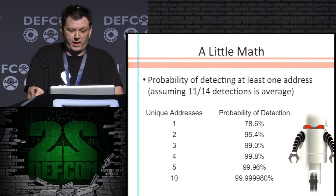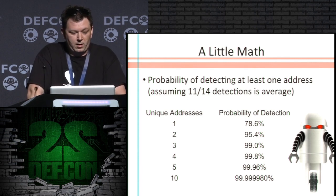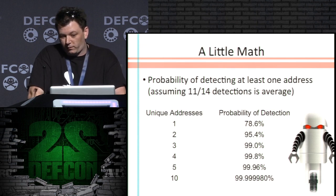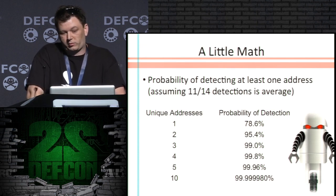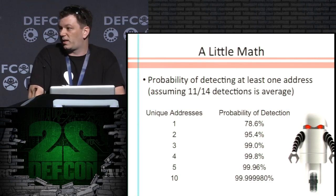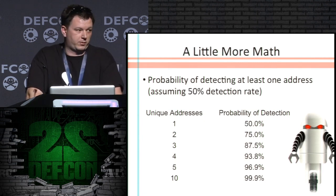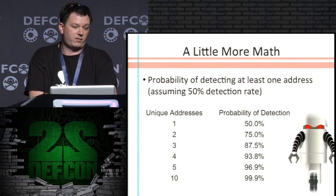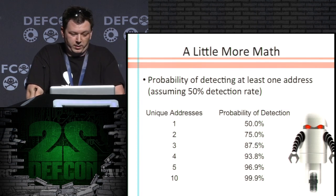Let's do a little math — how good would this work if we could get it to work in PIN? The math works out in your favor pretty quickly. Even at 10 addresses, there's a lot of nines in that detection probability — that's a good thing. And let's say this might be a little optimistic, so what if we drop it to 50 percent? Even at 10 addresses, you still have 99.9 percent. I was pretty happy with that.